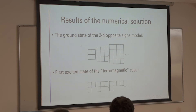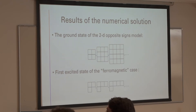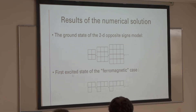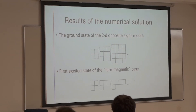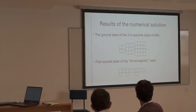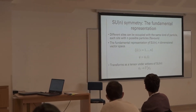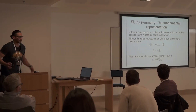Here are the results of the numerical solution. The ground state of the 2D lattice with opposite signs in columns corresponds to squares — I could only do it for up to 4×4 because it becomes impossible for 5×5, and I'm still trying to prove this analytically. Another interesting result is the first excited states of the ferromagnetic case correspond to diagrams of this sort, and I will show that analytically now.